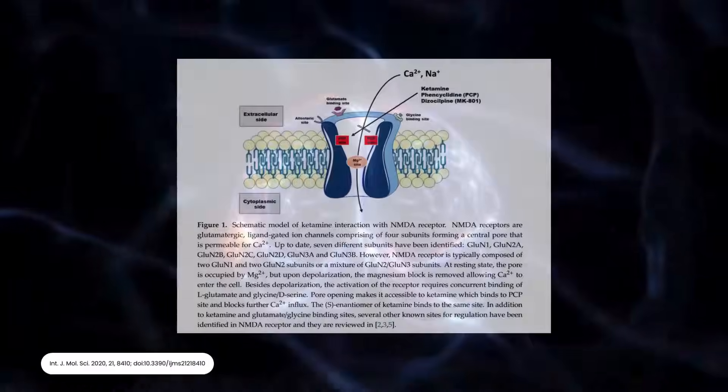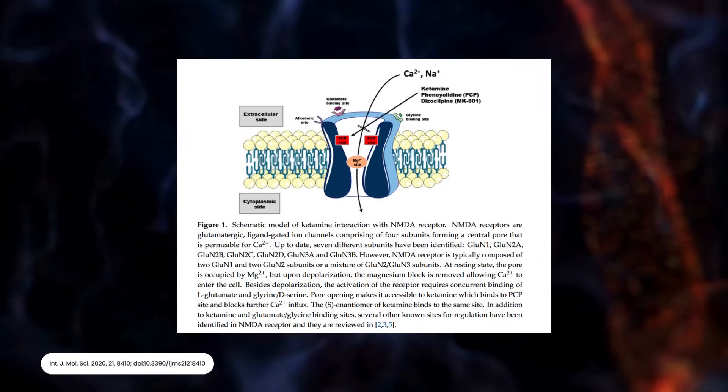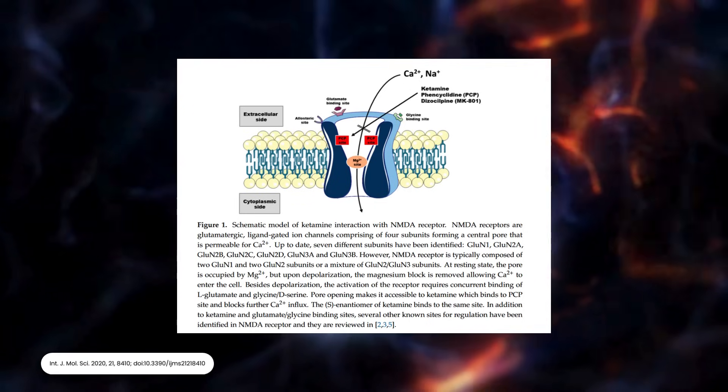Ketamine, an NMDA receptor non-competitive antagonist, dissociates the brain from external stimuli. The NMDA receptor belongs to the glutamate family, which contains neural excitatory properties. As a potent anesthetic, ketamine offers unique features compared to other sedatives.